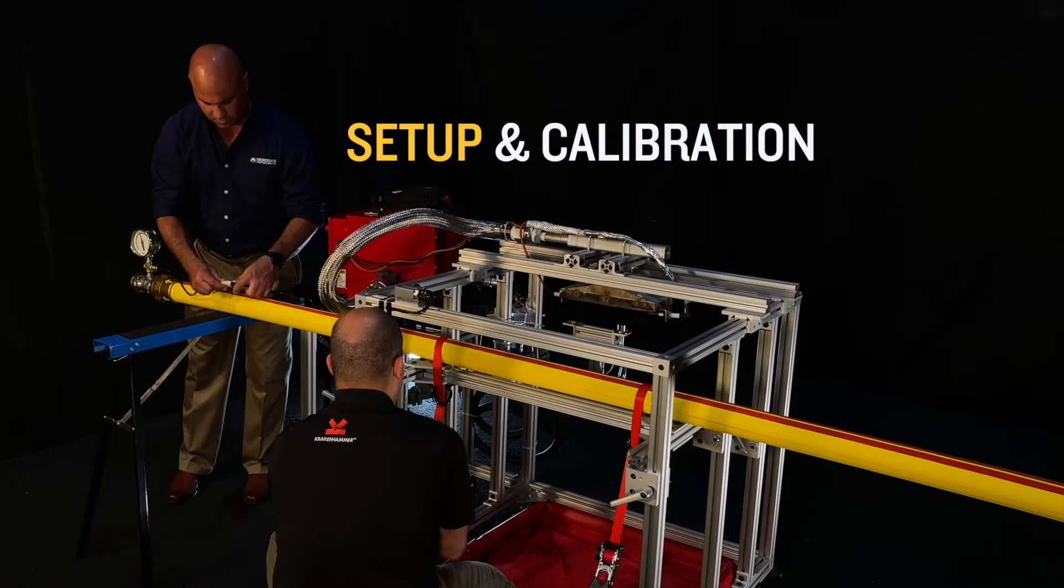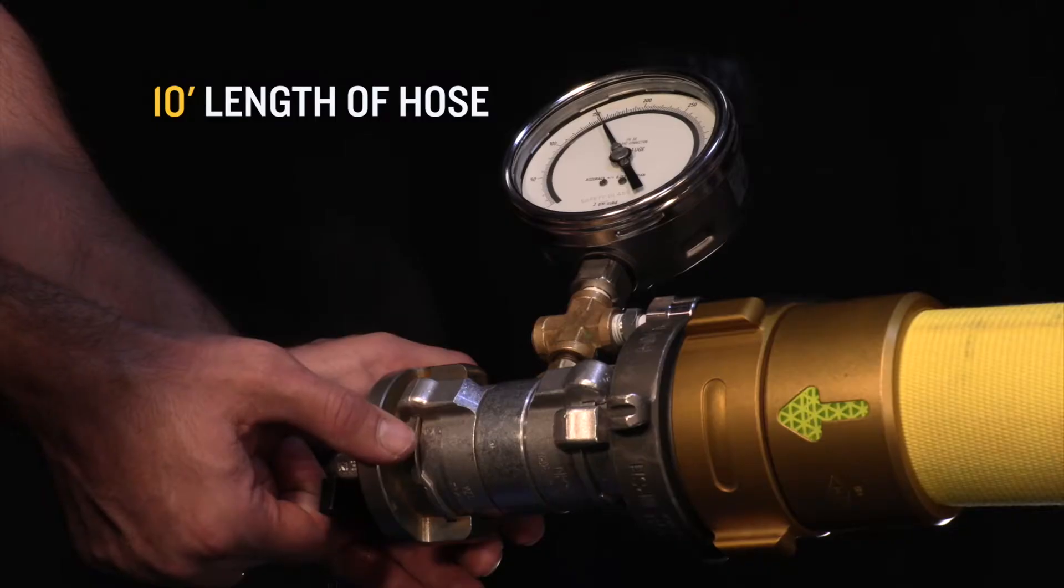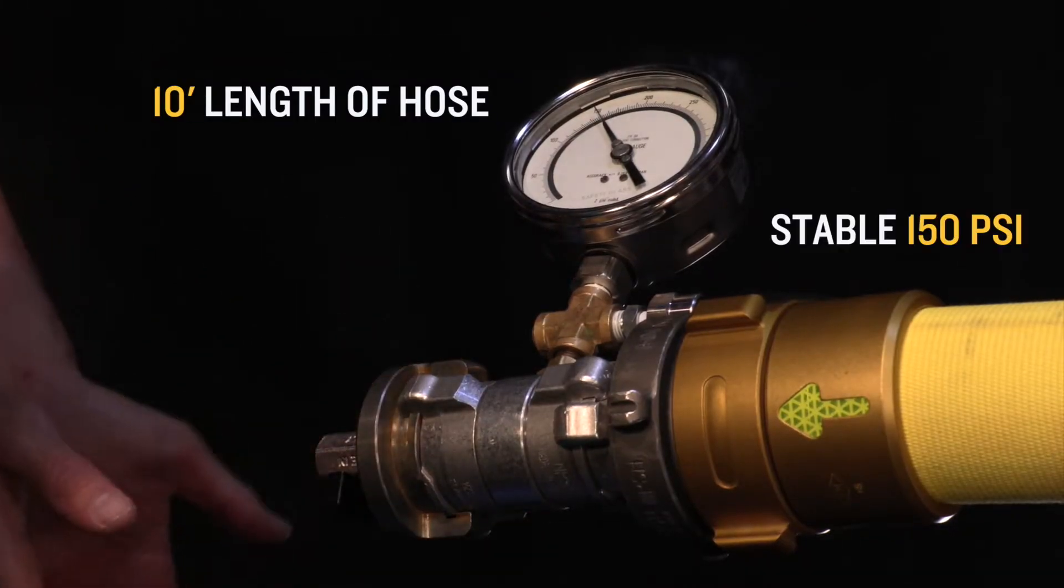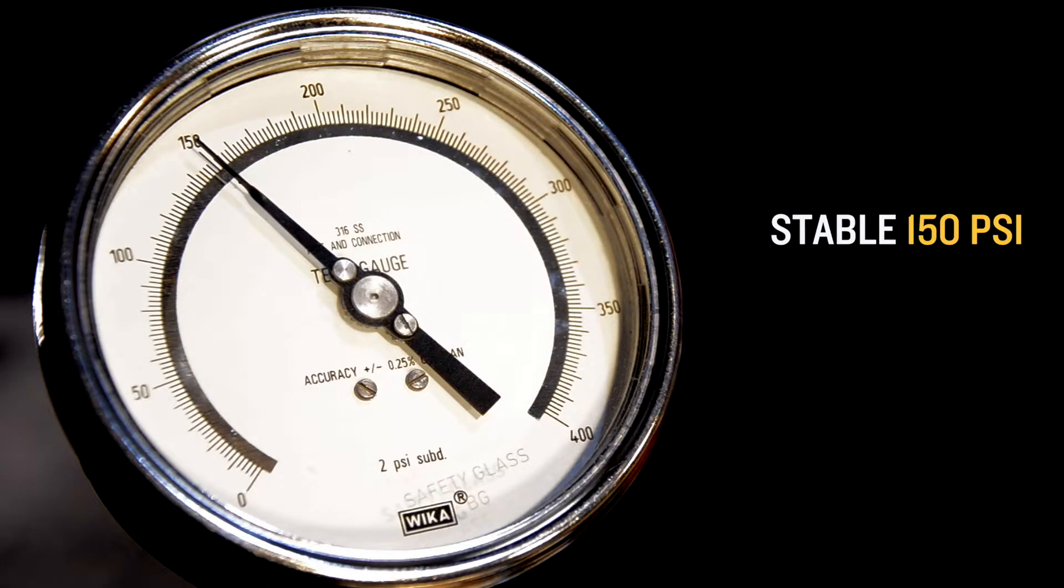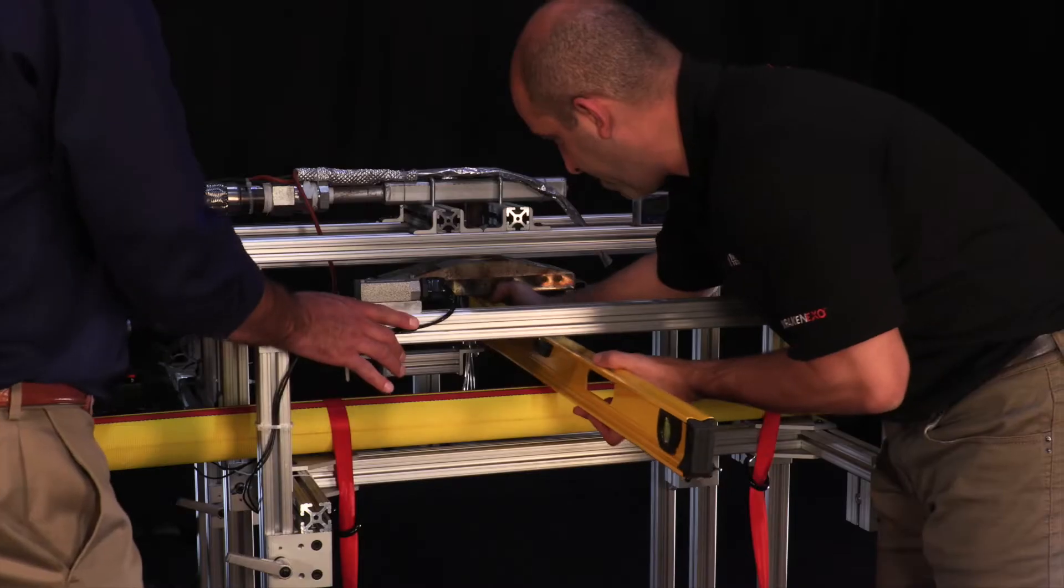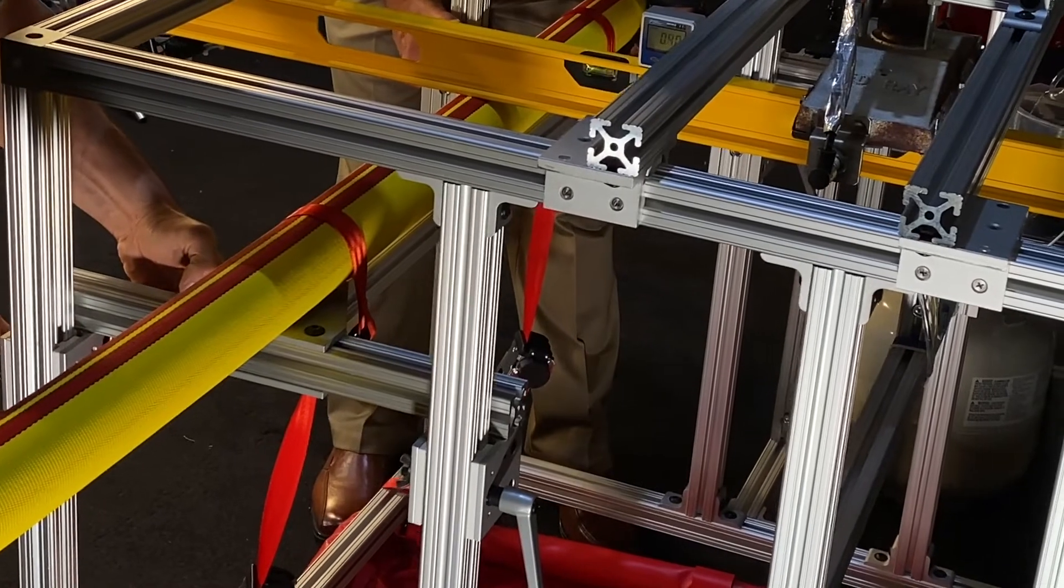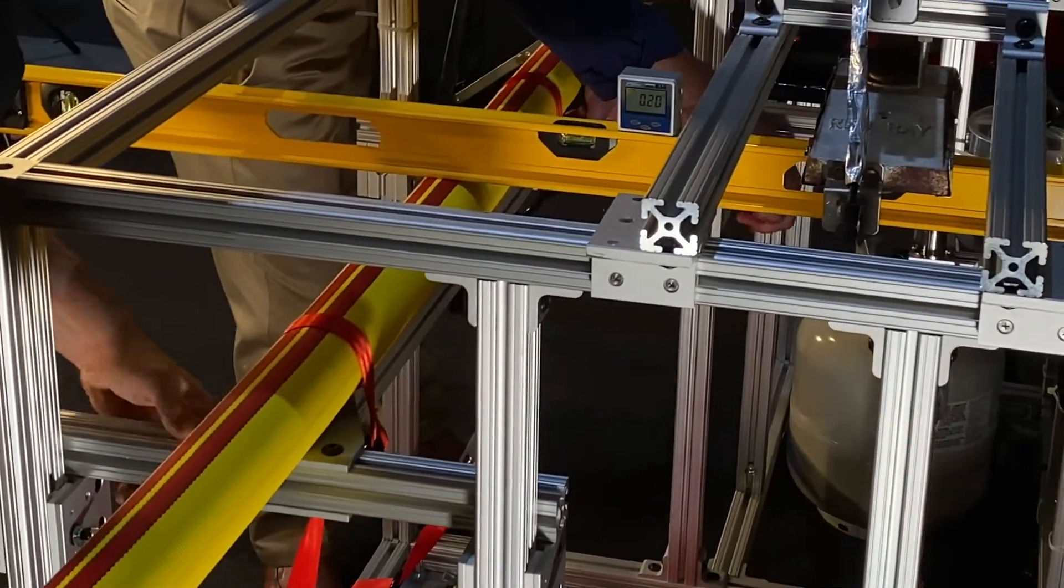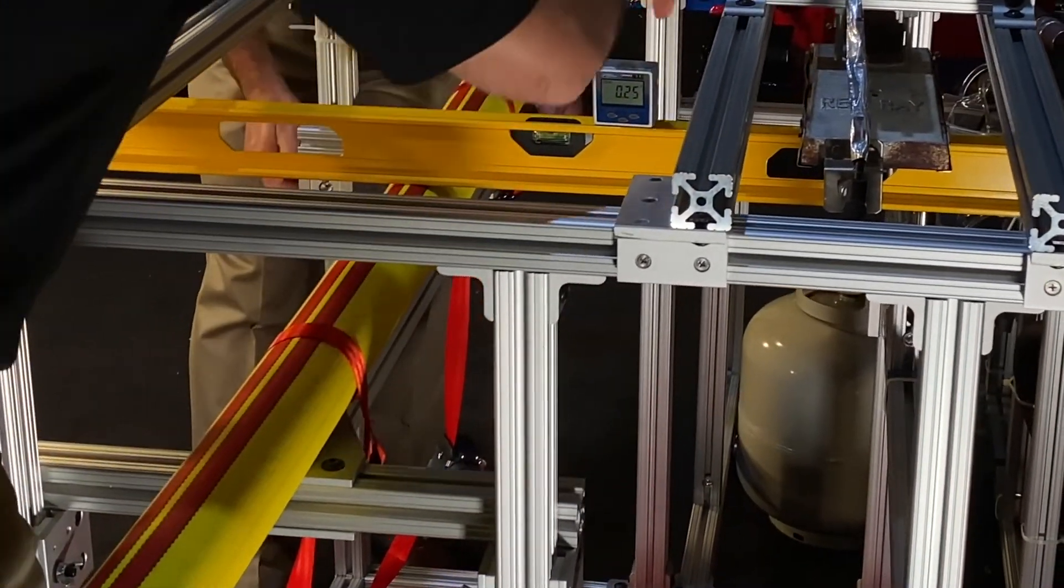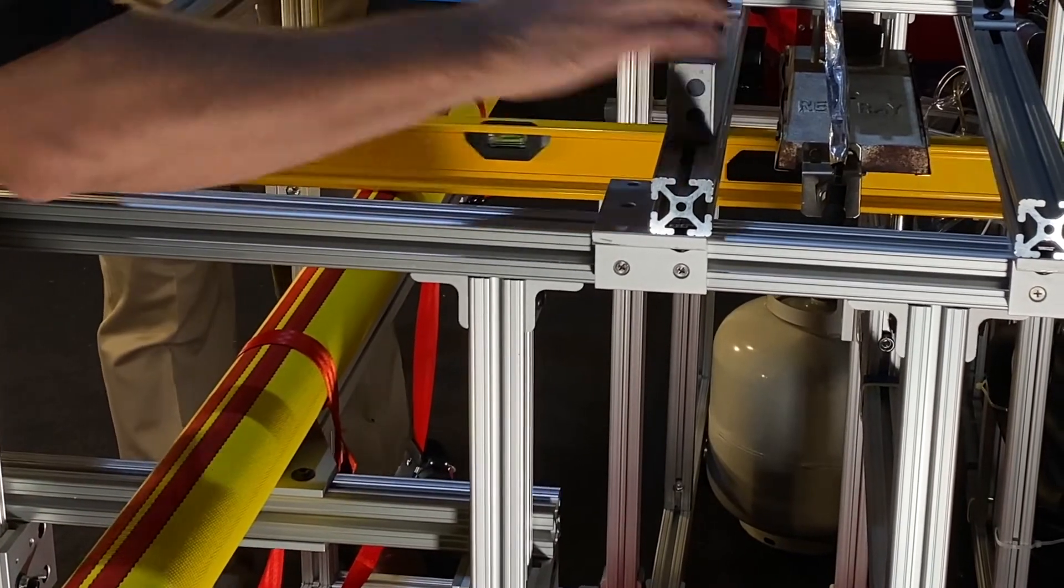In a nutshell, the test includes pressurizing a 10-foot section of hose to a stable 150 PSI, making sure the hose stays dry. We then place it under a radiant heat source and measure how long it takes for the pressure inside the hose to drop 20 PSI and reach 130 PSI.